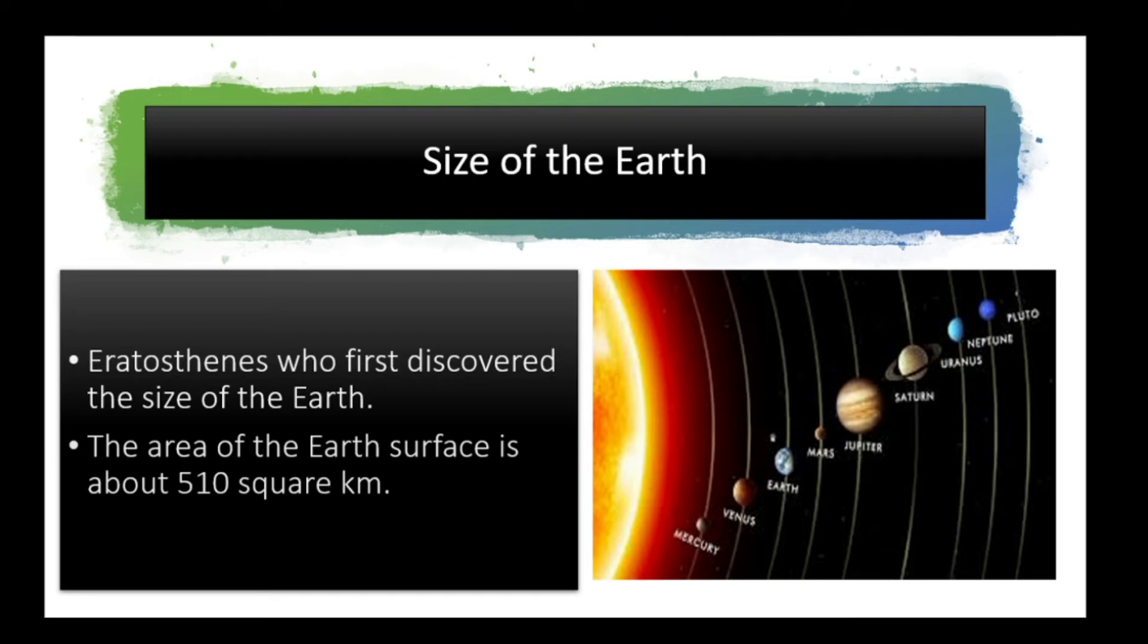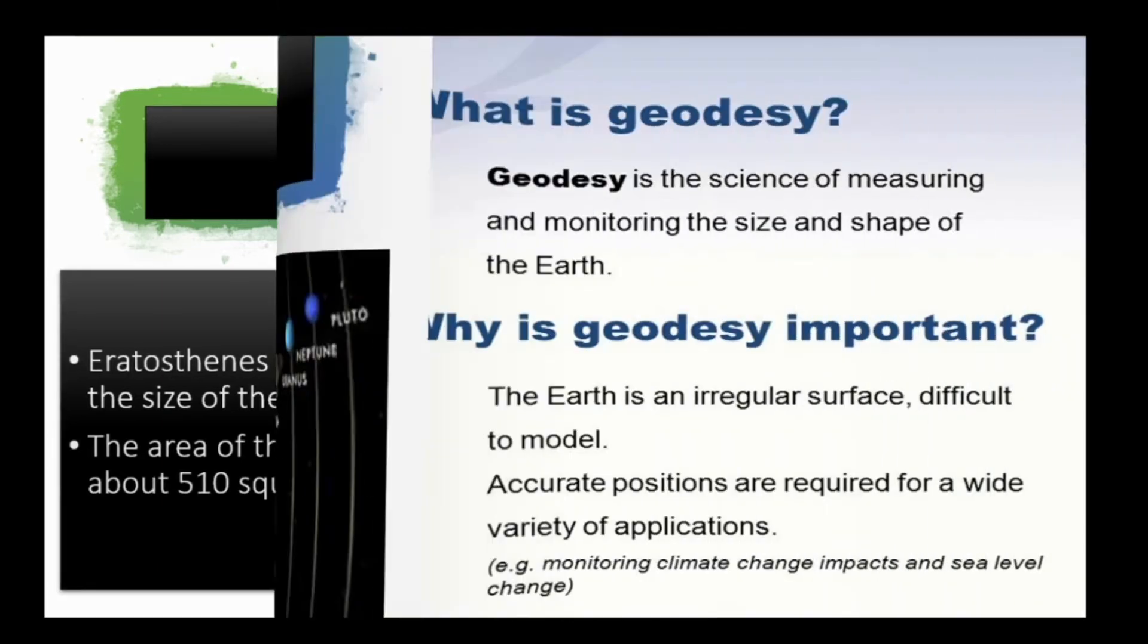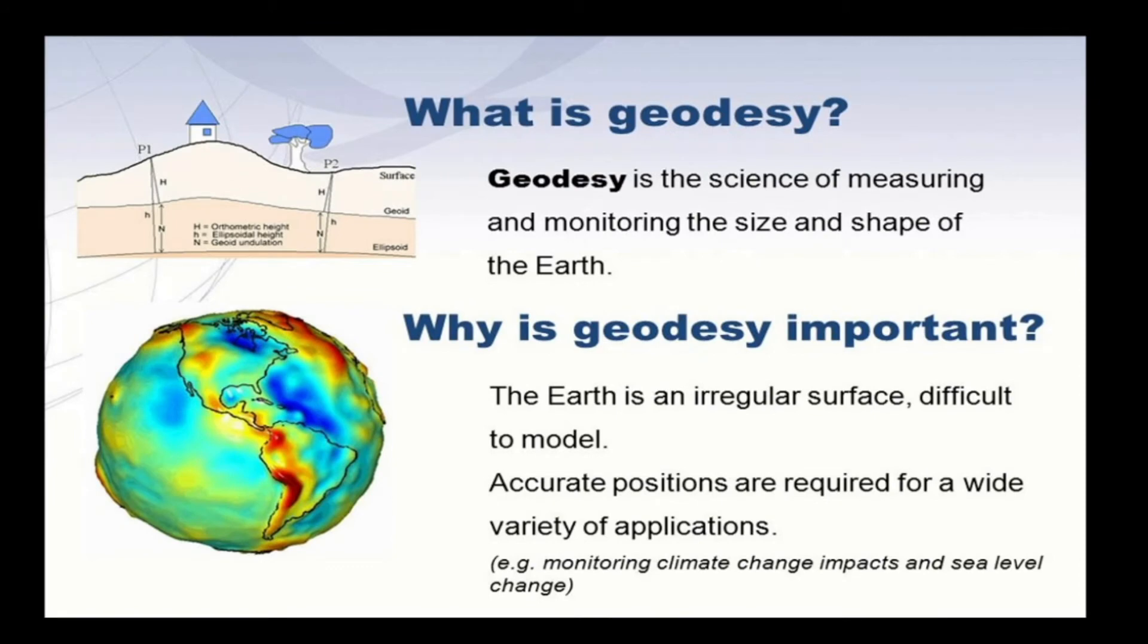So what is geodesy? Geodesy is the science of measuring and monitoring the size and shape of the Earth. So why is it important? The Earth is an irregular surface and it is difficult to model. Accurate positions are required for a wide variety of applications.